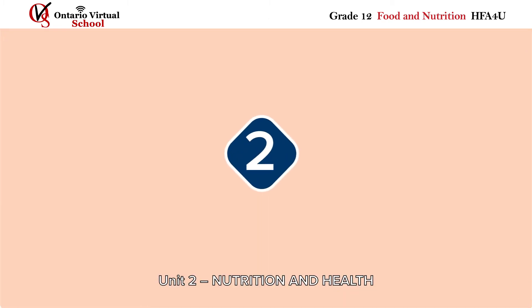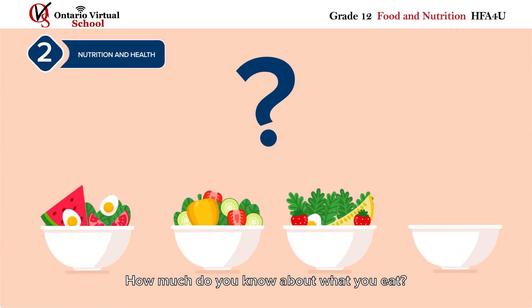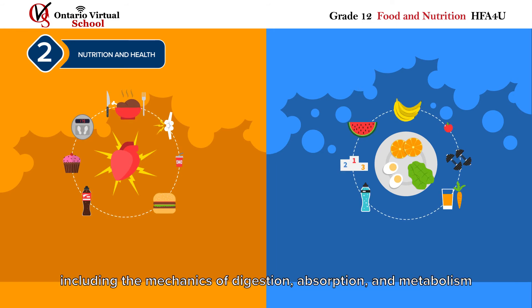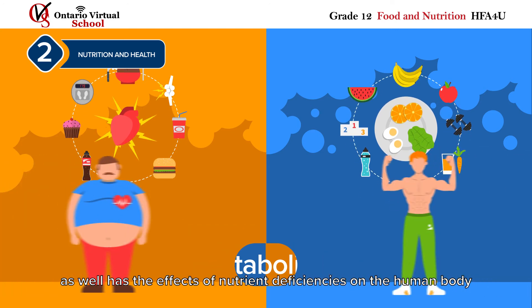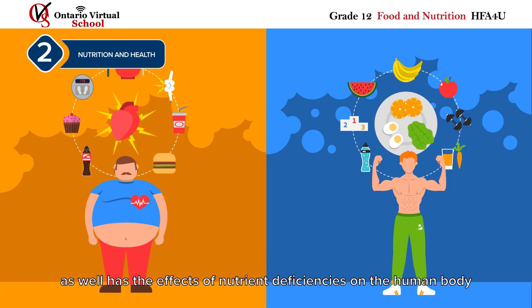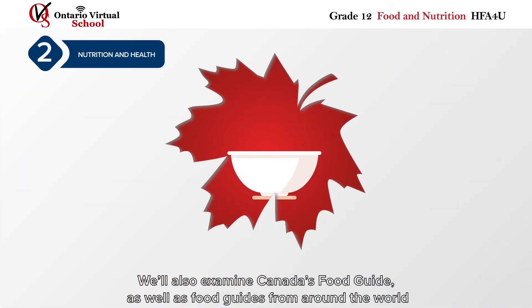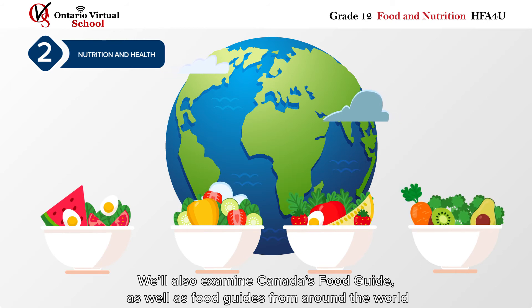Unit 2 – Nutrition and Health. How much do you know about what you eat? In this unit, you will learn about nutrients, including the mechanics of digestion, absorption, and metabolism, as well as the effects of nutrient deficiencies on the human body. We will also examine Canada's food guide, as well as food guides from around the world.